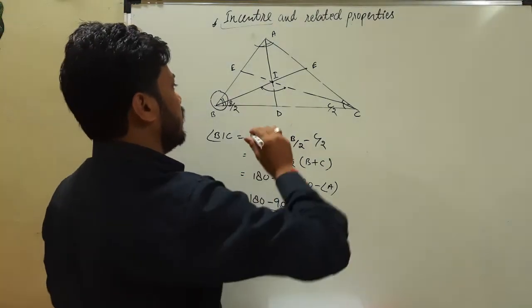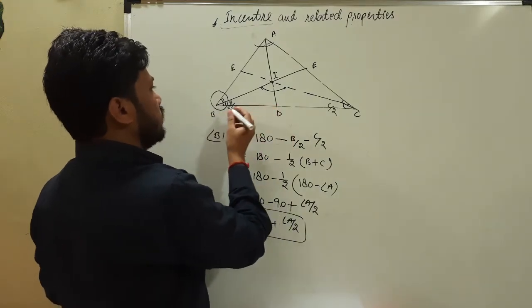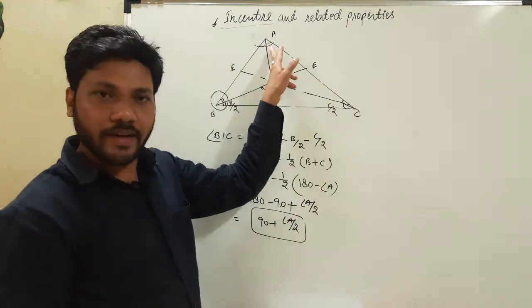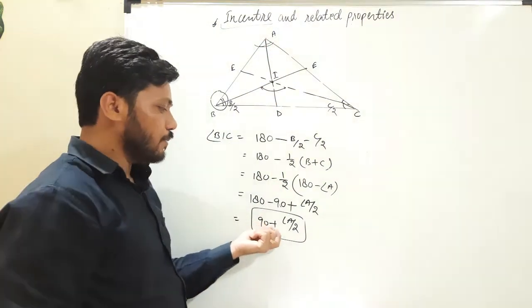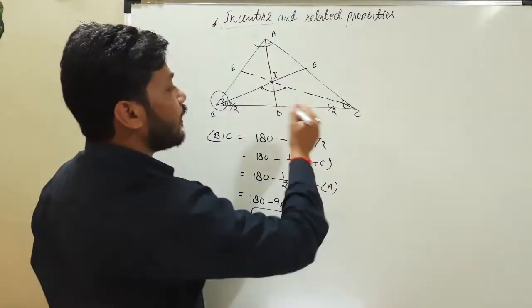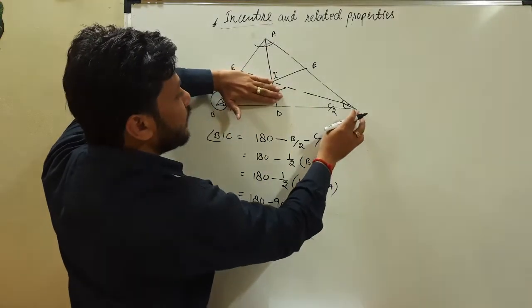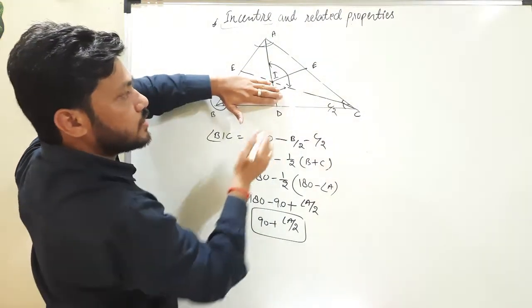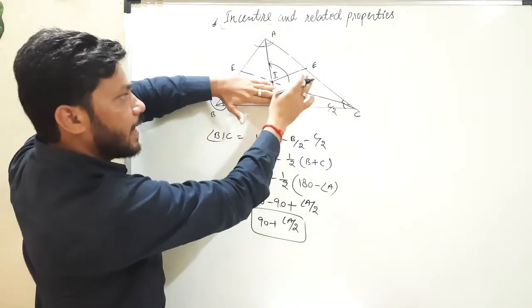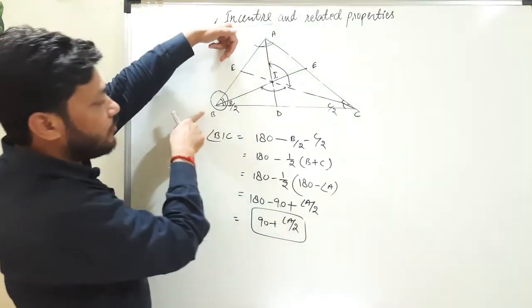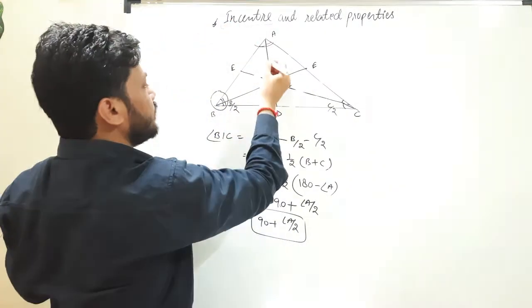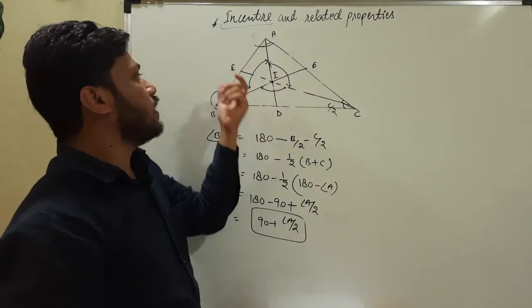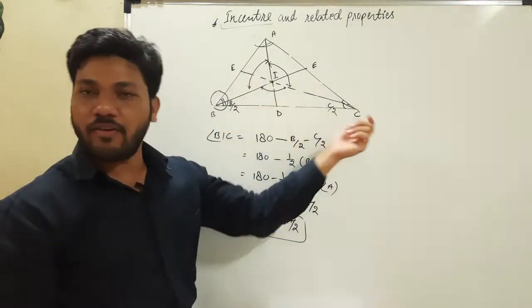It means if I need to find the value of angle BIC, I must know what is the value of angle A, because the formula is 90 plus half of A. Similarly, if I need to find angle CIA, that is going to be 90 plus half of angle B, and angle BIA is going to be 90 plus half of angle C.